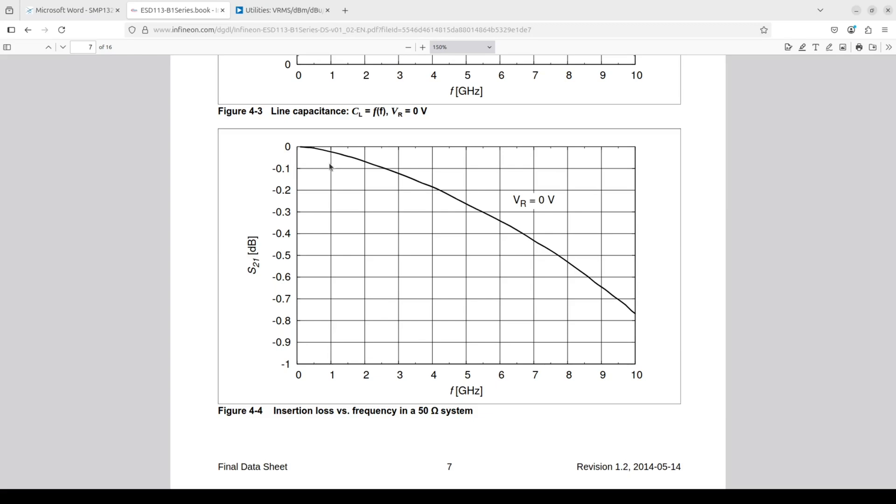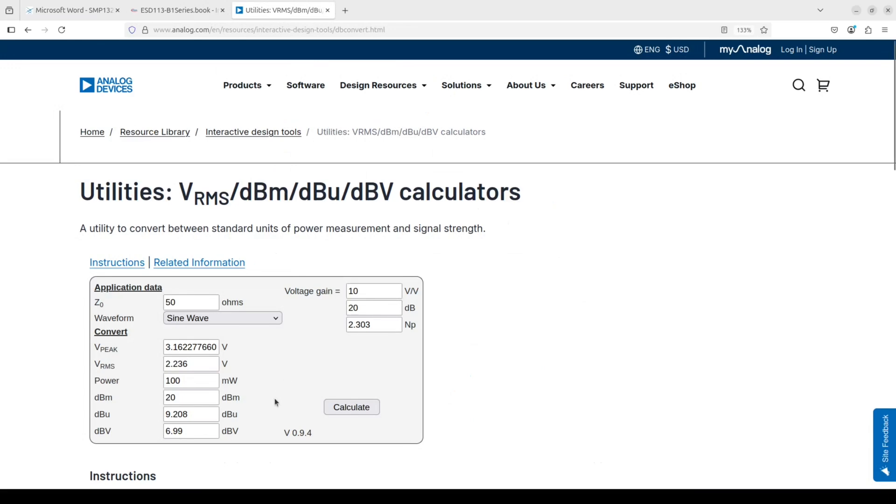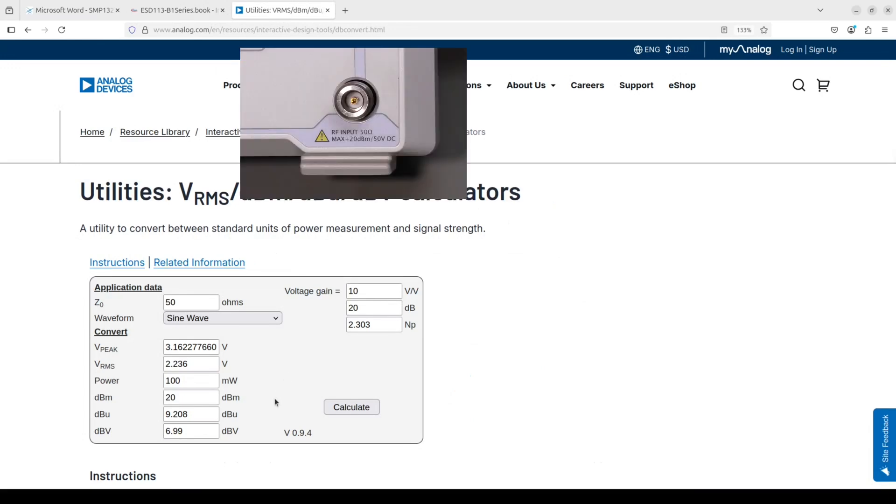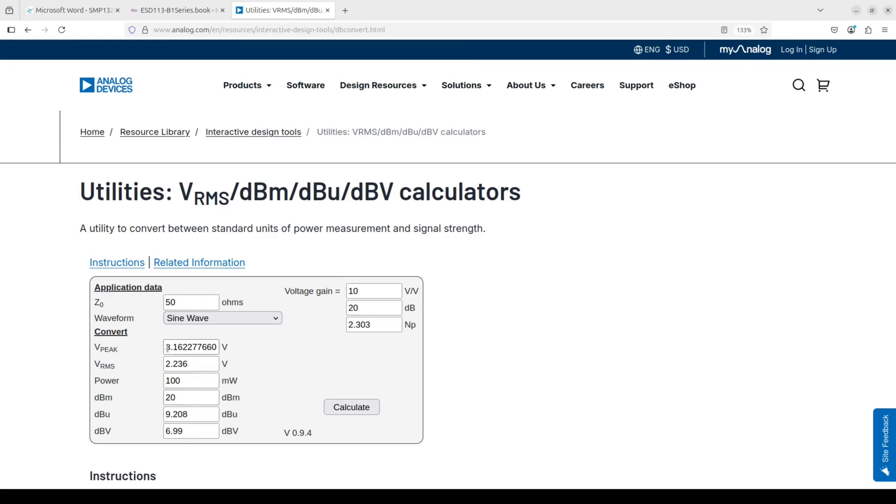And just to check all this makes sense, there is a warning next to the input connector on the spectrum analyzer saying 20 dBm max. And 20 dBm is about 3.16 V peak to peak. And after about 3.6 V, TVS diodes should trigger, which seems reasonable to me.